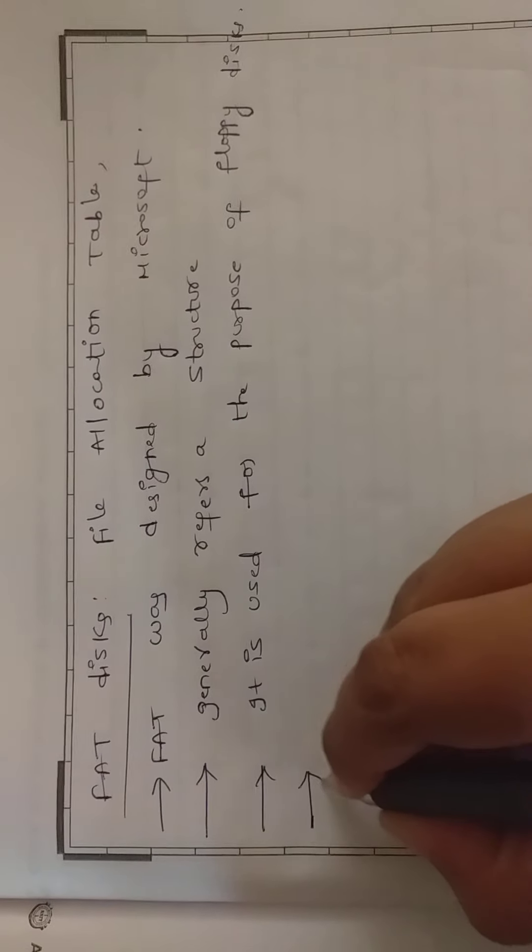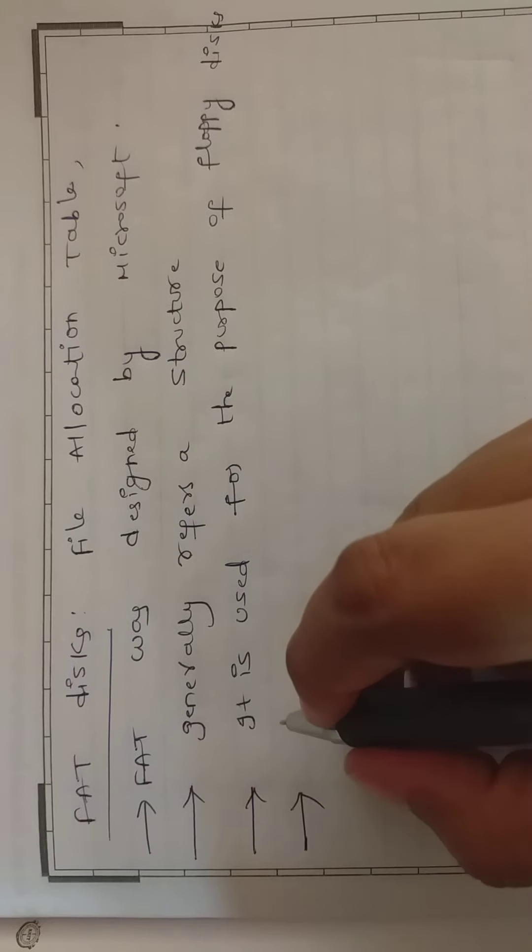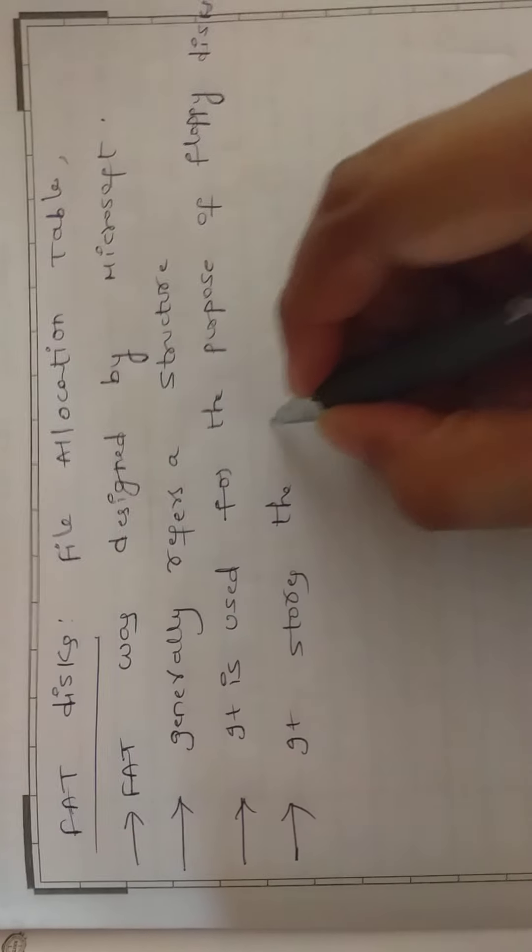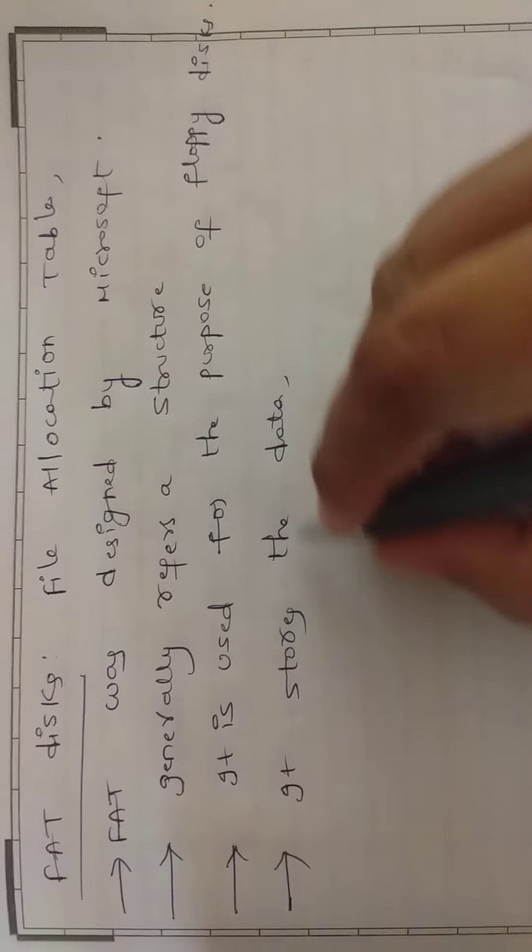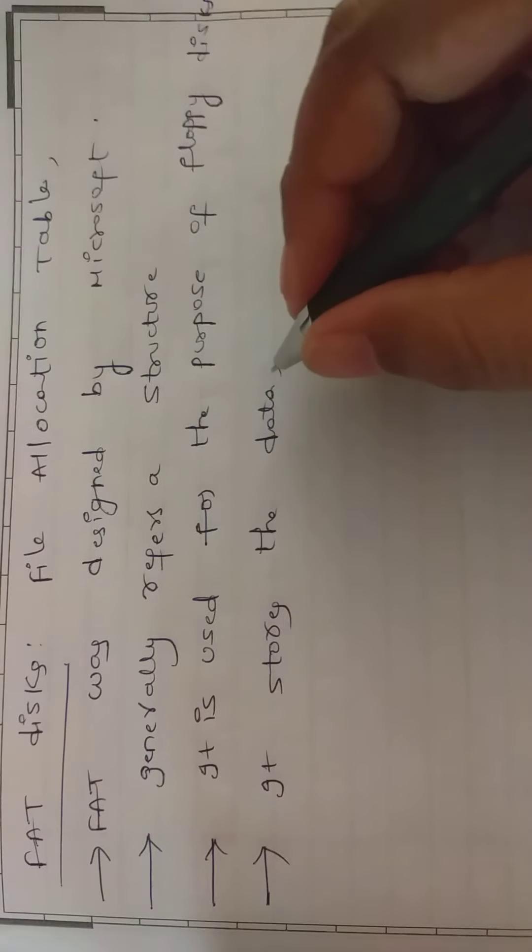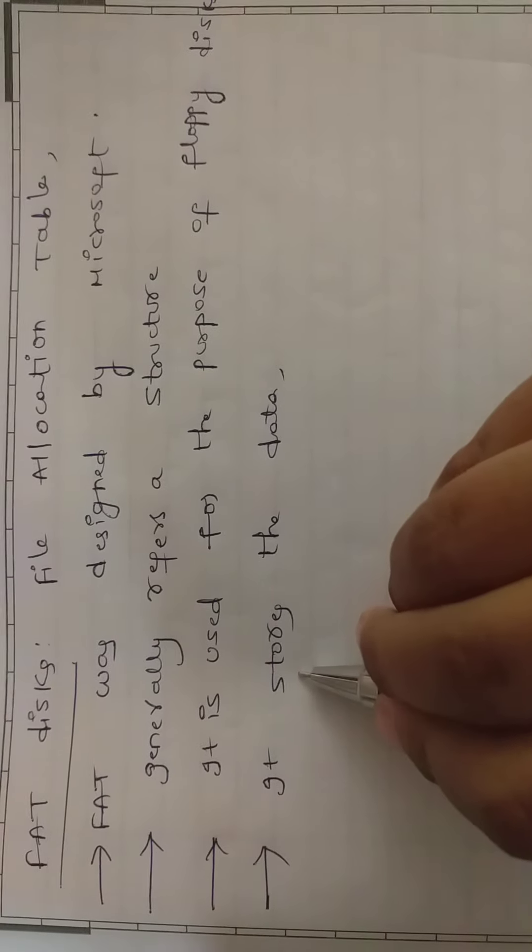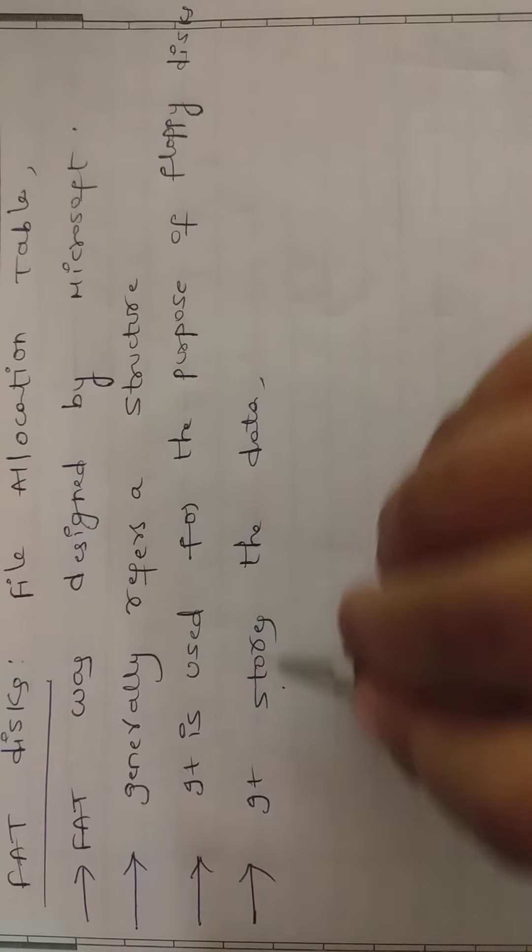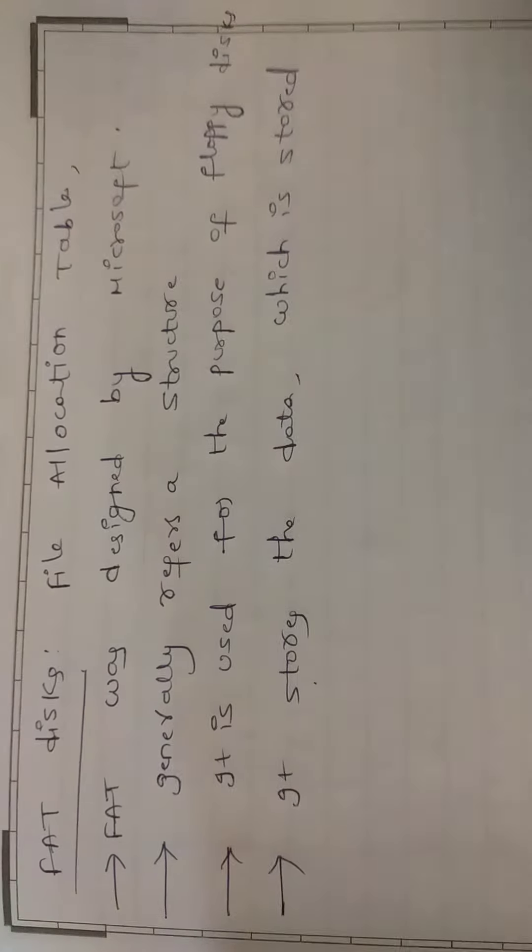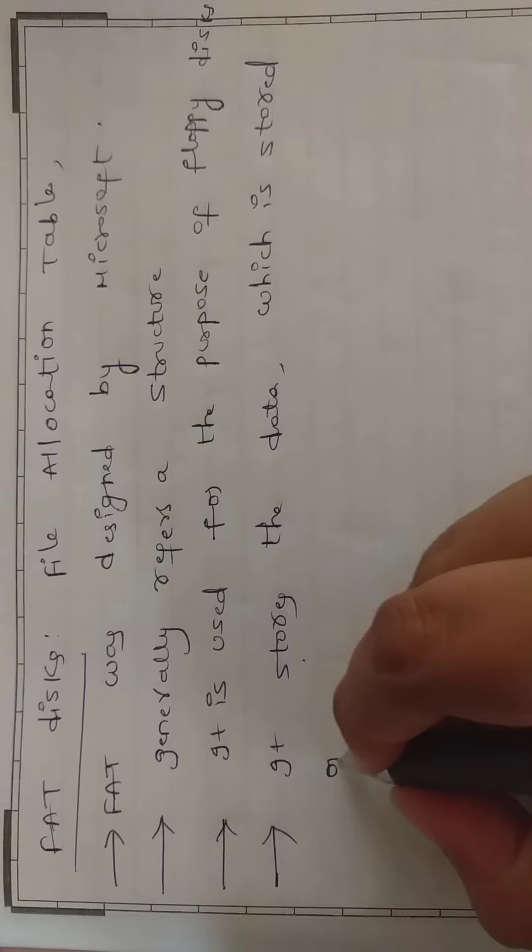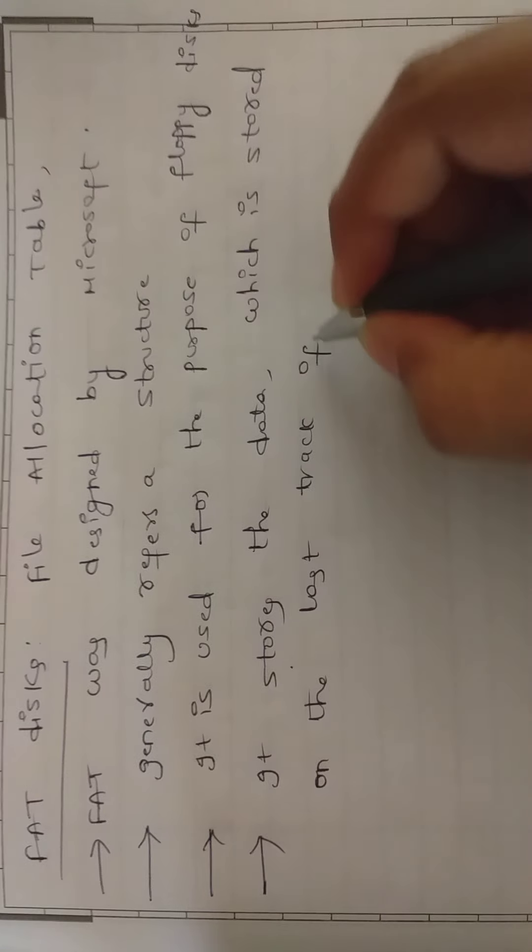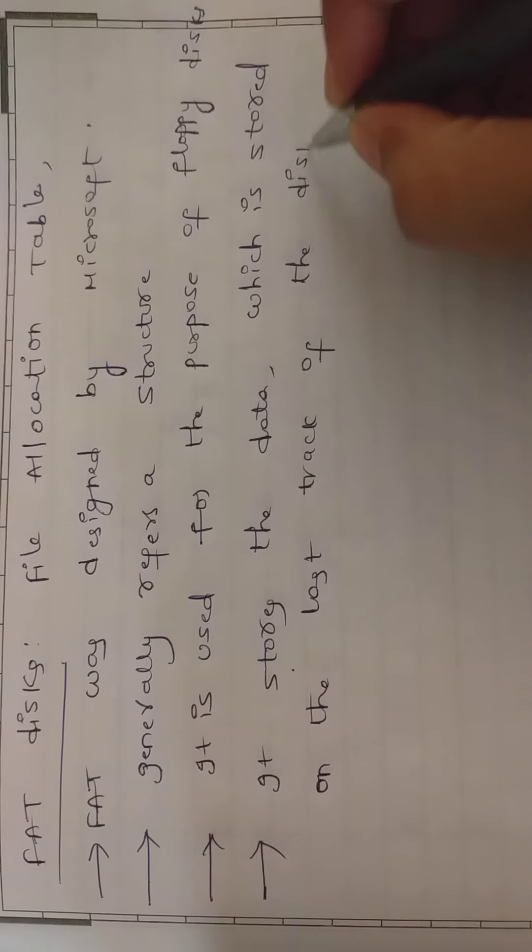The FAT file stores the data. What type of data or any information - characters or alphabets, any type. It stores the data which is stored on the last track of the disk.